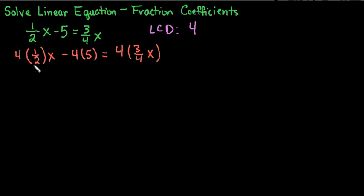We would then simplify what we have. So I would have 4 times 1/2, which is really just the same thing as 4 divided by 2, which gives us 2x minus 4 times 5, which is 20.